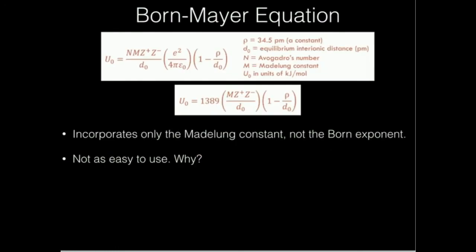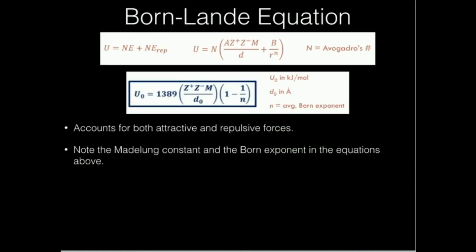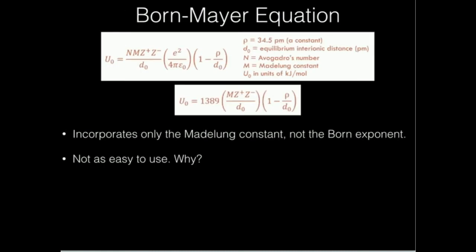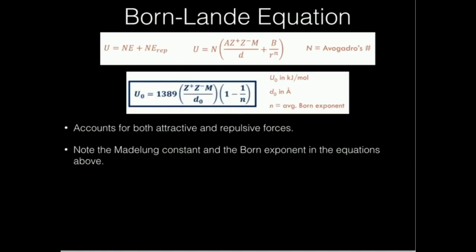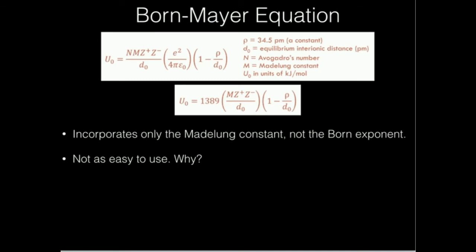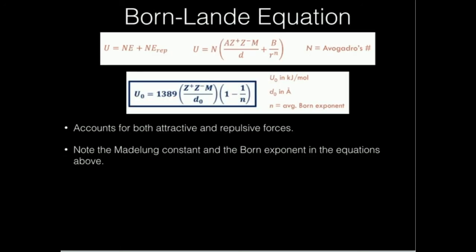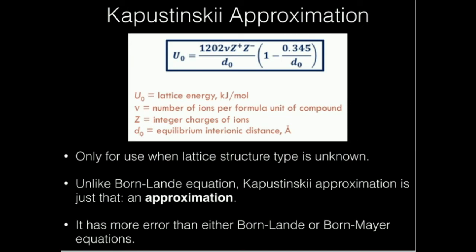To conclude this video, we're going to talk about the Born-Meyer equation. It's very similar to the Born-Landé equation — we still have M times Z₊ times Z₋ over D₀, and the 1,389 constant out in front. However, the term we multiply by is different. In the Born-Landé equation, it's (1 − 1/N); in the Born-Meyer equation, it's (1 − ρ/D₀), where ρ is a constant of about 34.5 picometers divided by the interionic distance.